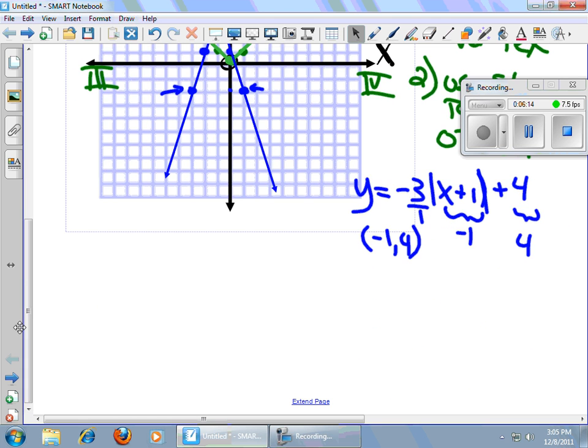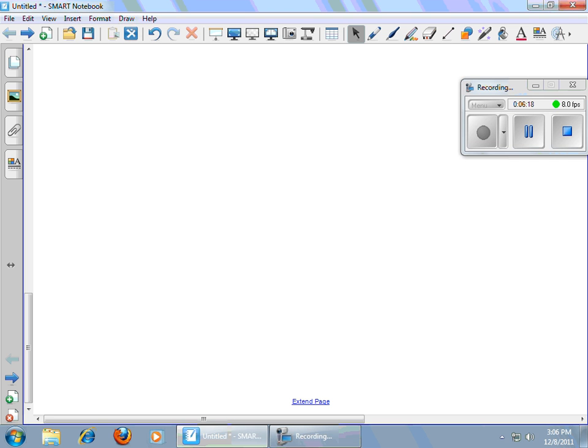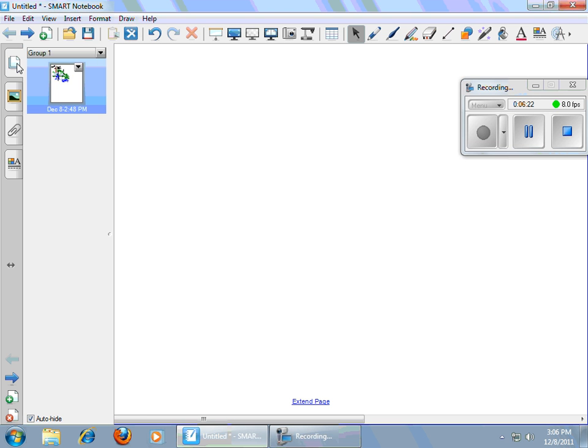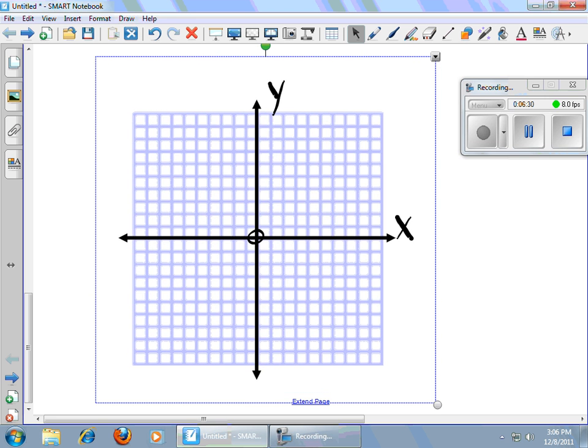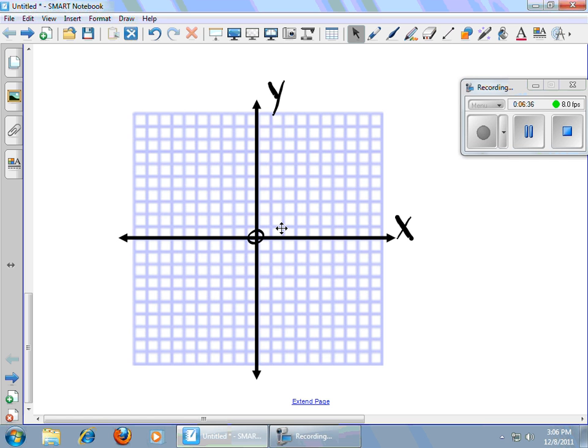Now the real question is, this domain and range stuff. We're not using t-tables to graph these. We used a t-table to get an understanding of them. We're not going to use a t-table to get the domain and range. First of all, these graphs go on forever, don't they? So let me do an equation here. Let's go Y equals one-half times the absolute value of X minus 2 plus 1. The first thing I'm going to do is I'm going to find my vertex, and my vertex will be located at the point 2, 1. And I'm going to plot that 1, 2, 1.